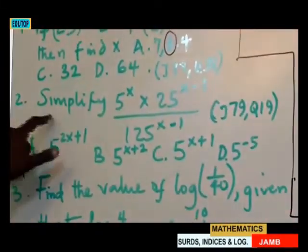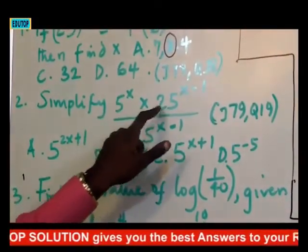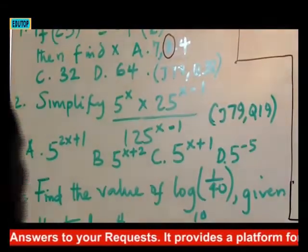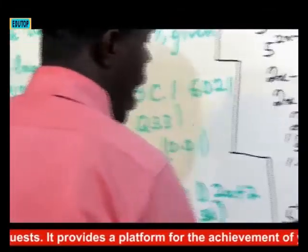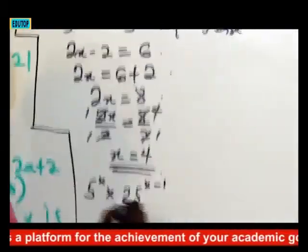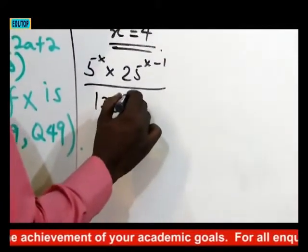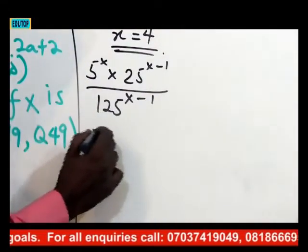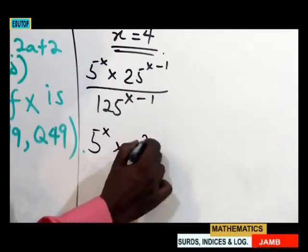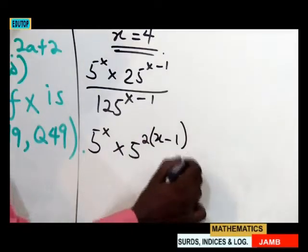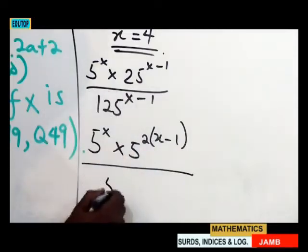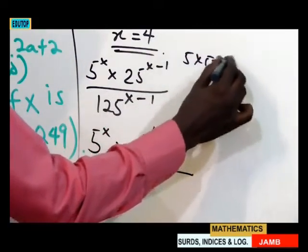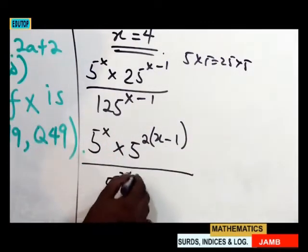The second question says: simplify 5^x times 25^(x−1) divided by 125^(x−1). We have 5^x times 25^(x−1) over 125^(x−1). We rewrite 25 as 5² and 125 as 5³. So the expression becomes 5^x times (5²)^(x−1) over (5³)^(x−1), which expands to 5^x times 5^(2x−2) over 5^(3x−3).